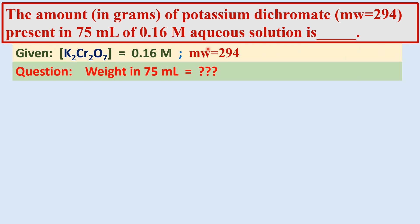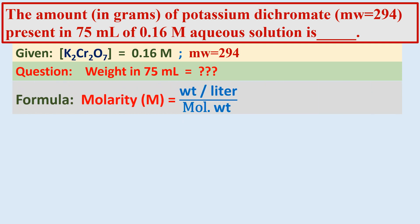From the given data, let us calculate the weight of potassium dichromate in 750 ml of aqueous solution. The formula used is: molarity is equal to weight per liter divided by molecular weight — that is, weight of potassium dichromate dissolved in 1 liter divided by molecular weight.